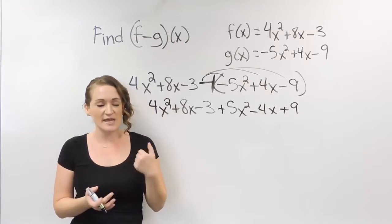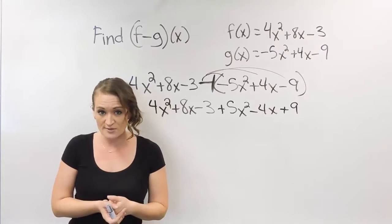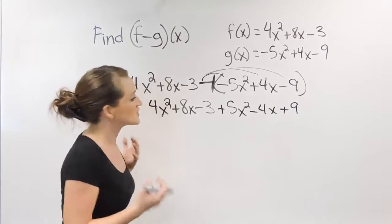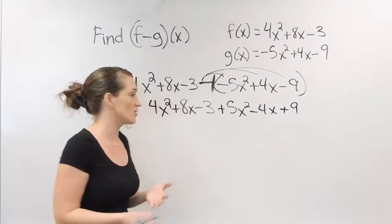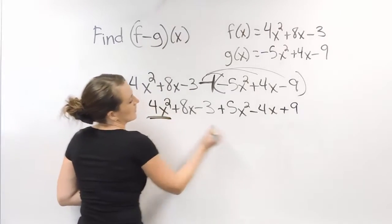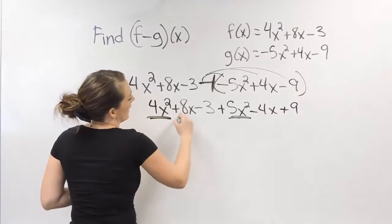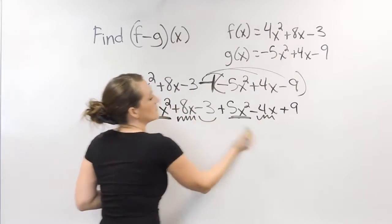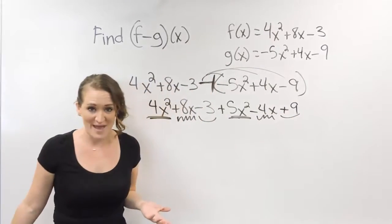Like terms means they have the exact same variables. I call this the matching game. We literally just match up our like terms. So x² and x² match up, x and x match up, and then a number and a number also match up.